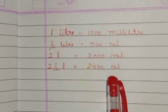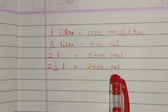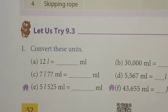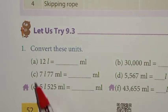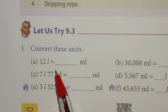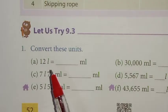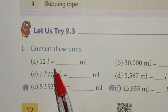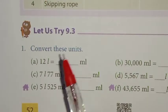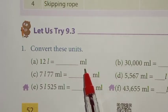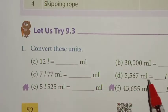Next, we can do the textbook activity on page number fifty to convert these units. The first one: twelve liters equals how many milliliter? Since one liter equals one thousand milliliter, twelve into one thousand equals twelve thousand milliliter.